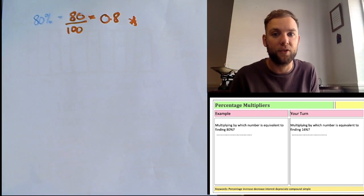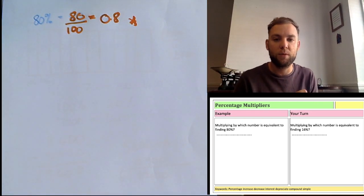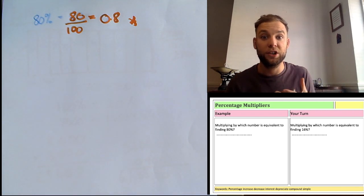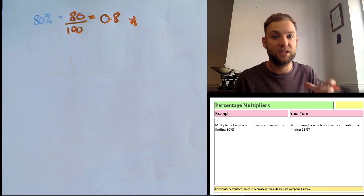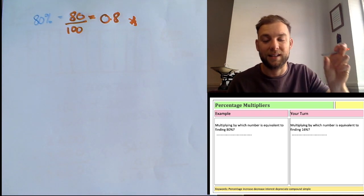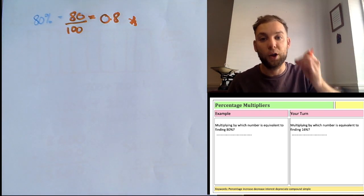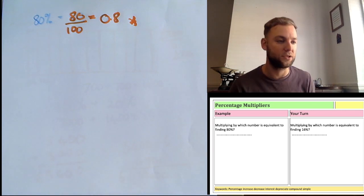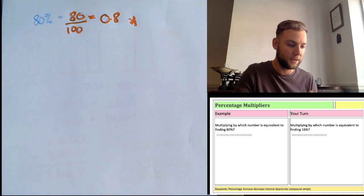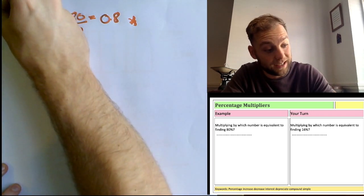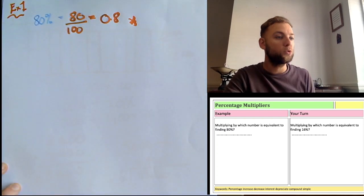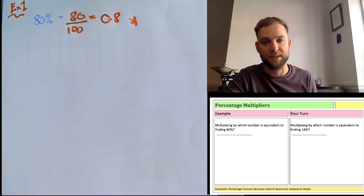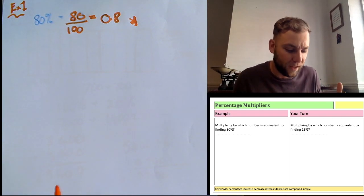We can use this multiplier for calculator methods, reverse percentages, compound interest, depreciation, and multiple percentages — it helps with those trickier problem-solving questions. So Example 1: which number is equivalent to multiplying to find 80 percent? Let me just prove that to show you.